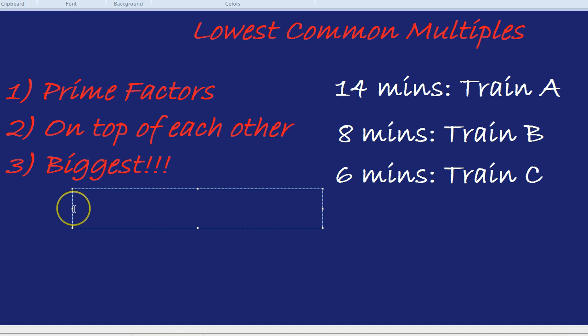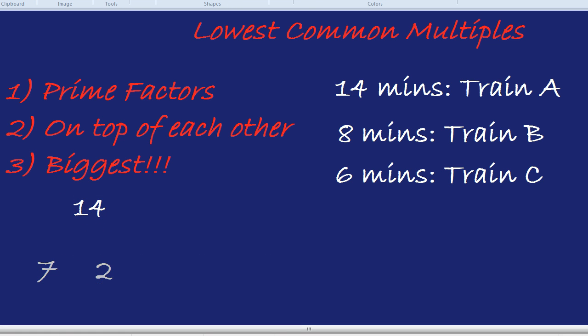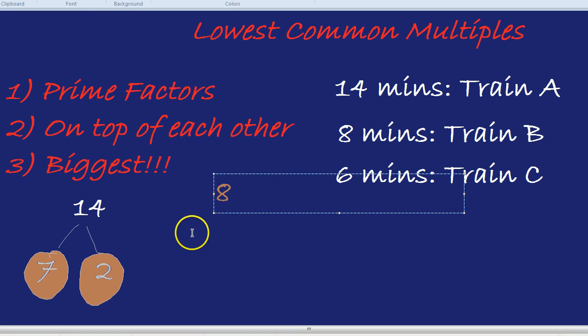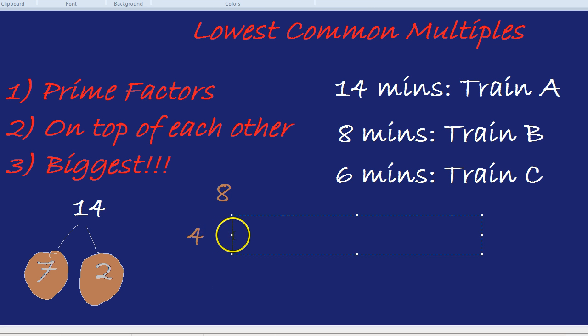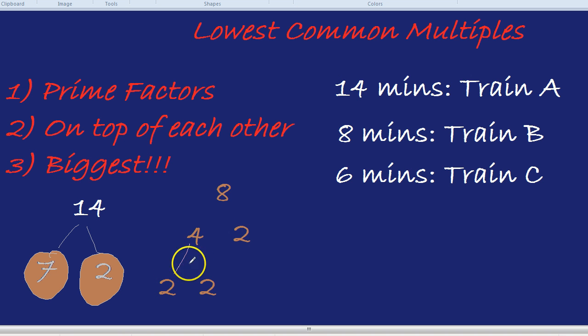We're going to do the lowest common multiple for those three numbers. 14 is 7 times 2, which are both prime factors. Then we have 8, which is 4 times 2, and 4 which is 2 times 2. Splitting that into a tree with only the prime factors highlighted.